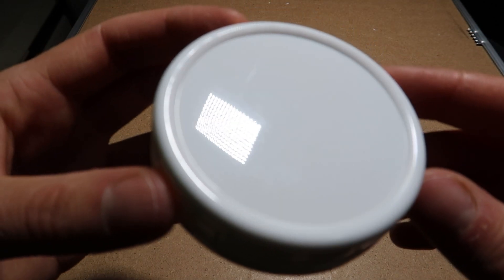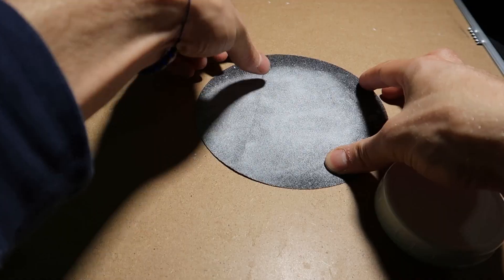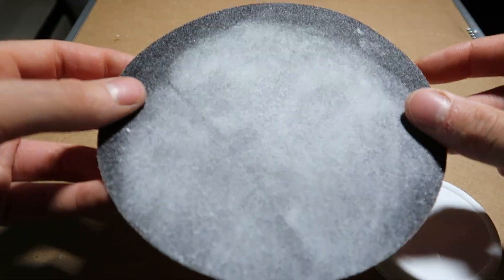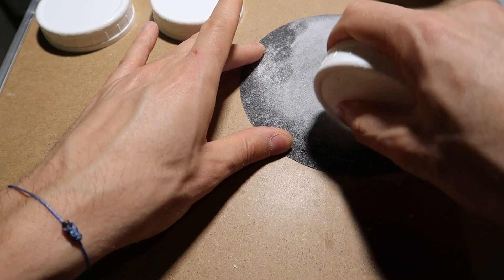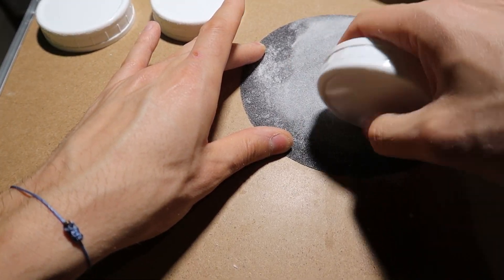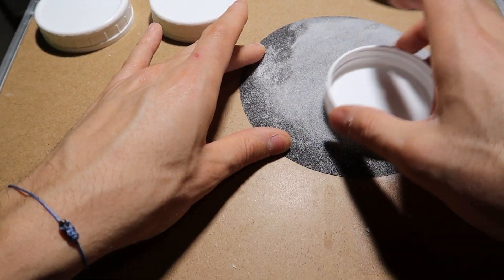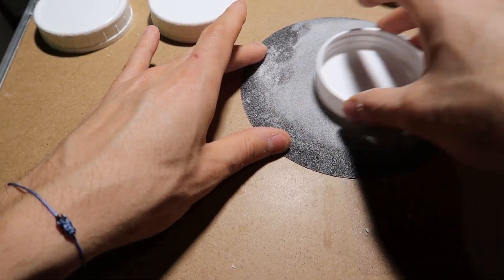This is what the lid looks like when it's unsanded. Very shiny. Take your sandpaper. If you don't have any sandpaper and don't feel like picking some up, go outside and use some concrete. Go crazy. But instead we're going to be using sandpaper because we're doing this indoors.